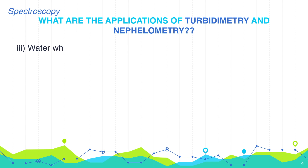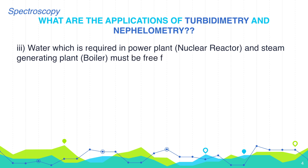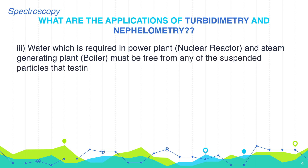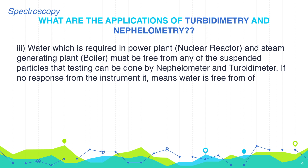Water which is required in power plants, nuclear reactors, and steam generating plants like boilers must be free from any suspended particles. That testing can be done by nephelometry or turbidimetry. If there is no response from the instrument, it means the water is free from suspended impurities.